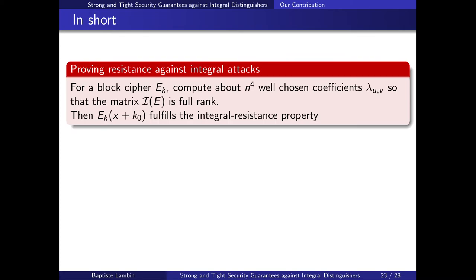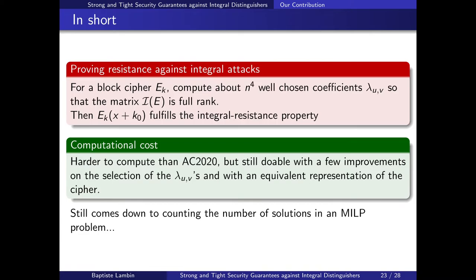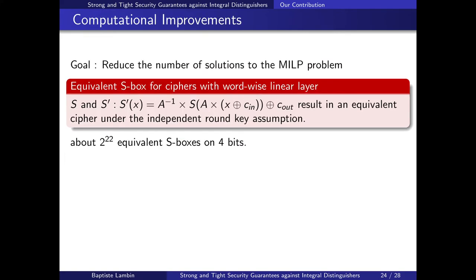In short, for a block cipher E_k we compute about n^4 well-chosen coefficients lambda_{u,v} so that the matrix is full rank. If we can do so, we show that the block cipher with a whitening key fulfills the integral resistance property, meaning it is immune to integral attacks. We compute these lambda_{u,v}'s using what we did last year at AsiaCrypt. However, even with that work it was still computationally expensive: to compute these lambda_{u,v}'s we need to count solutions to an MILP problem, which is generally quite hard.